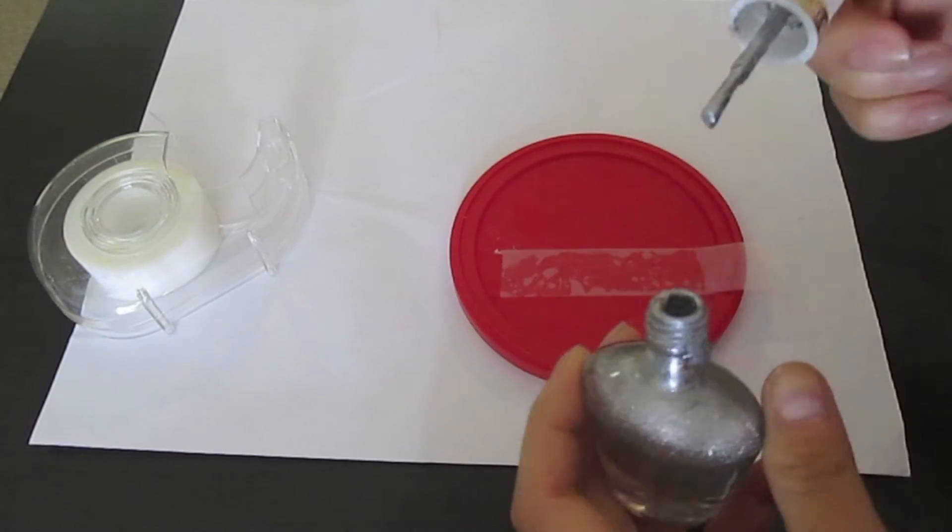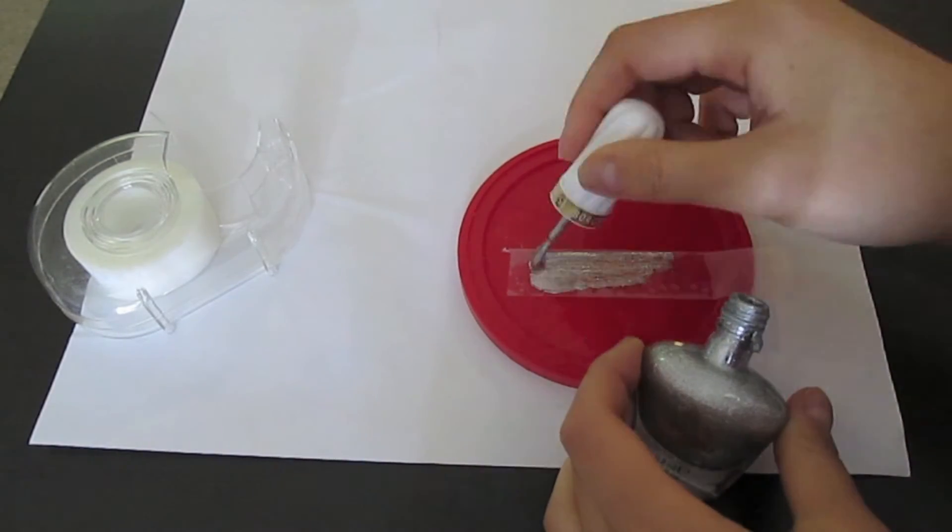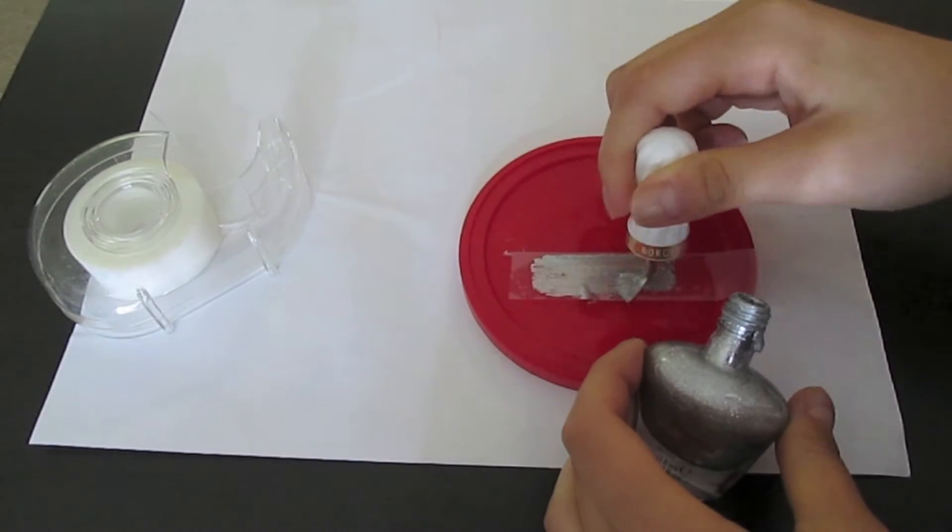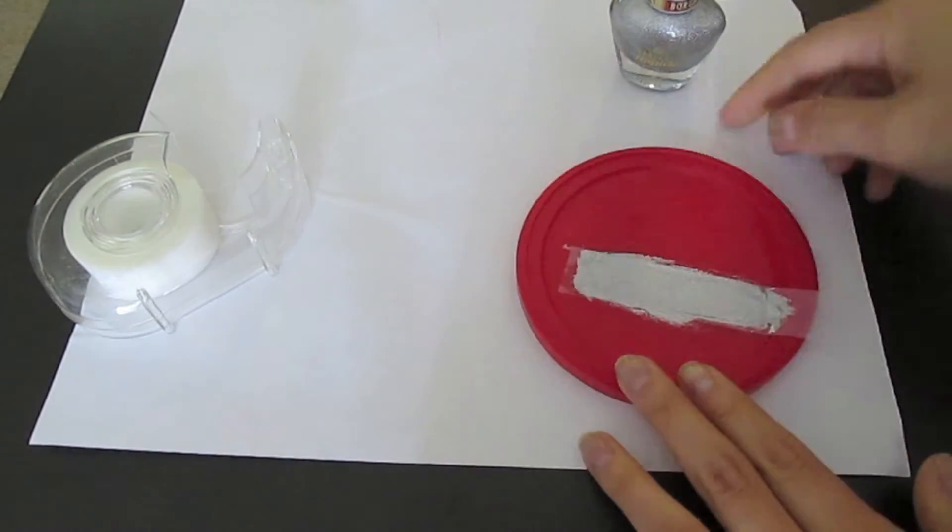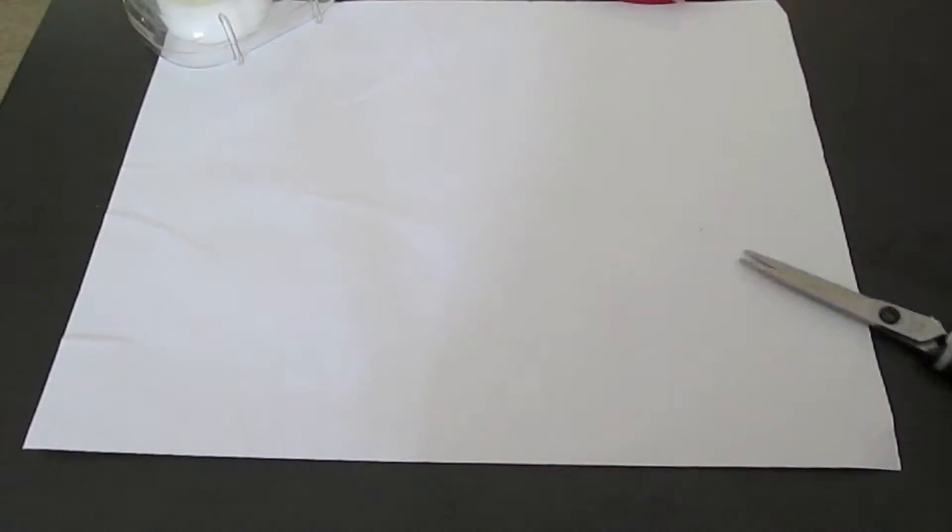Then you're going to apply a good amount of nail polish onto the tape and just spread it out evenly.